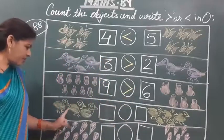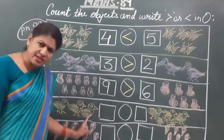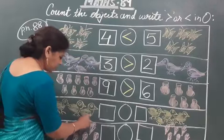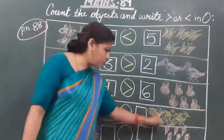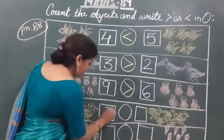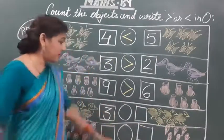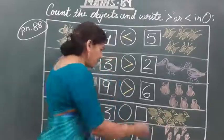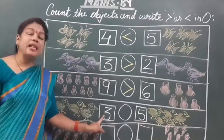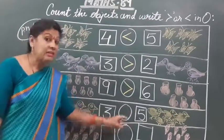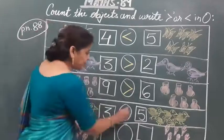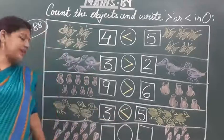Next one: one, two, three — three chicks are given there. Chhoti-chhoti si babies hai. One, two, three. And on the other side: one, two, three, four, five — only three are there. Then we will write the number three. And: one, two, three, four, five. Then how to identify? Three is less than five. Three kya hai? Five se chota hai. Is liye yeh sign lagana hai.